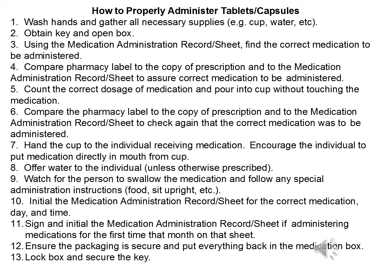How to properly administer tablets or capsules. Step 1: Wash hands and gather all necessary supplies — for example, cup, water, etc. Step 2: Obtain key and open box. Step 3: Using the medication administration record sheet, find the correct medication to be administered. Step 4: Compare the pharmacy label to the copy of prescription and to the medication administration record sheet to assure the correct medication is to be administered.